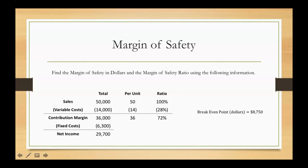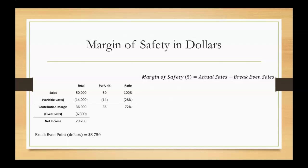The margin of safety is how far above your break-even point you are. When calculating the margin of safety in dollars, we take our actual sales and subtract out our break-even sales. Our actual sales, looking at the CVP income statement, is $50,000 — the total amount in sales made during this time period.